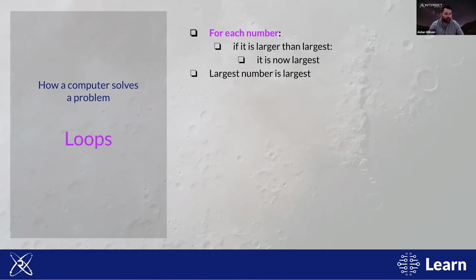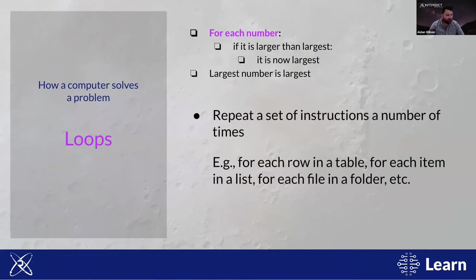Instead we use a loop. In our pseudocode this is the first line: 'for each number' — meaning keep repeating the next lines for each new number as long as new numbers are coming. In effect, a loop repeats one set of instructions over a set of inputs — in our case, numbers. Loops are a very powerful feature: if you define the steps needed to process one row of data or one file in a folder, you can use a loop to apply those steps to all other rows or all other files with just one or two lines of code.